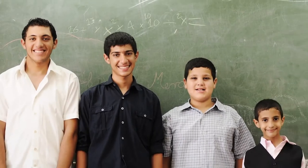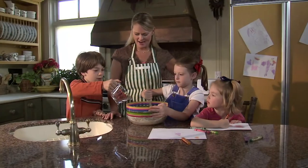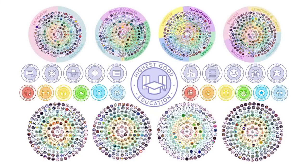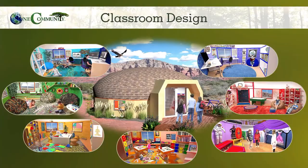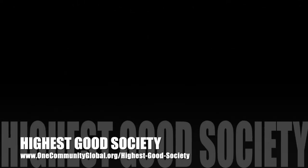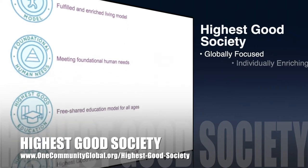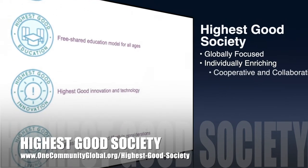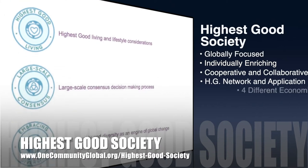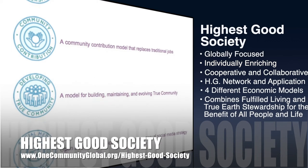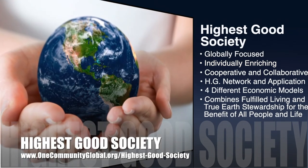The highest good education component is complete and pretty much ready to launch once on the property. It is designed for all age groups, adaptable to any schooling environment, inspiring and fun, and includes national standards, all subjects, lesson plans, teaching and learning strategies, tools, classroom design, and more. The One Community approach to highest good society is globally focused, individually enriching, cooperative and collaborative — it includes a highest good network and application, four different economic models, and combines fulfilled living and true earth stewardship for the benefit of all people and all life on this planet.